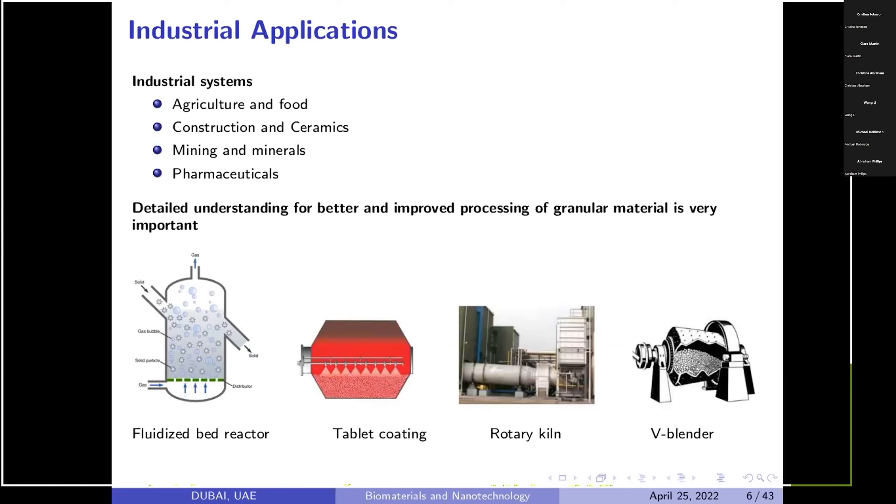These are some representative applications extending from agriculture and foods to pharmaceuticals. You can see fluidized bed dryer, tablet coating, rotary kiln, blenders, ball mills, jaw crushers, everywhere these granular materials are handled. The understanding of these granular materials is very poor from industrial point of view. There is no specific course even at undergraduate level, not only in chemical engineering, but material science, nanotechnology, mechanical engineering, civil engineering, geological engineering. Nowhere such kind of courses are available where undergraduate students can learn.